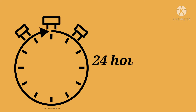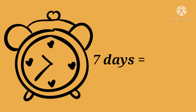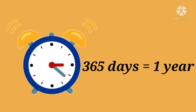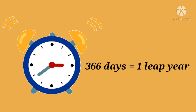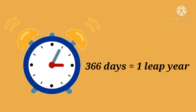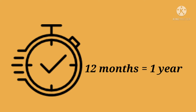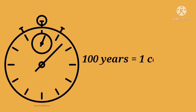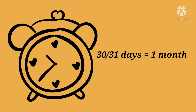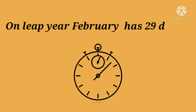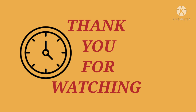24 hours is equal to one day, 7 days is equal to one week, 365 days is equal to one year, and 366 days is equal to one leap year. 12 months is equal to one year, 100 years is equal to one century. 30 or 31 days is equal to one month. Only in February does the year have 29 days.